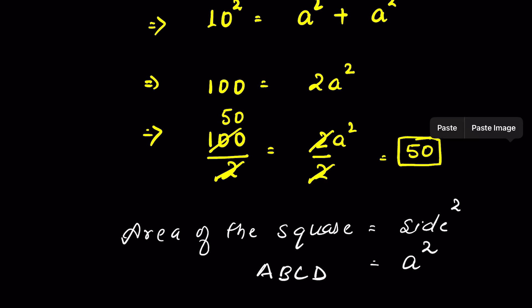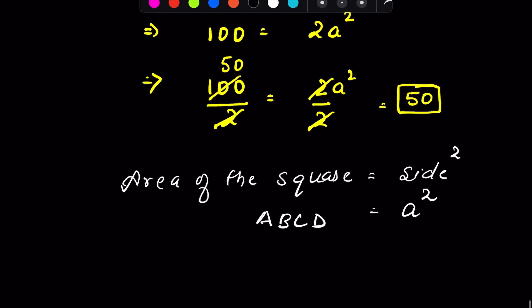Here a square is 50 cm square. So area of the square is 50 cm square. This is the area of the square. So, first part of the question we solve.